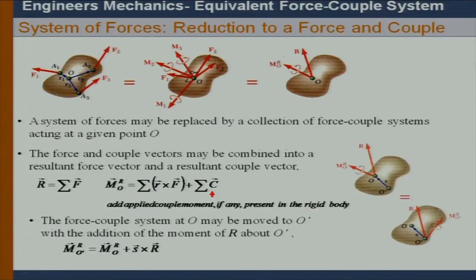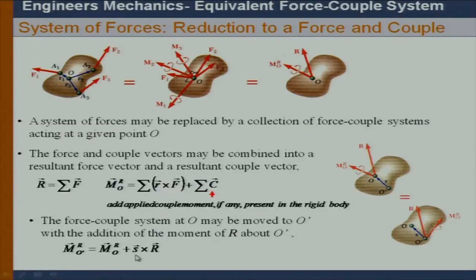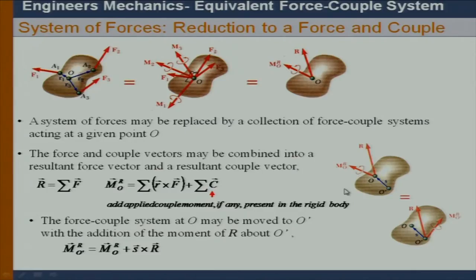If I want to take this system — now a resultant force and resultant moment — to a different point O prime, I will do the same operation. The resultant R will be translated with an added moment component again. The new moment resultant M_O_prime will be simply the previous moment resultant plus s cross R, where s cross R accounts for the translation of R to point O prime. Pictorially, all of these drawn here are actually equivalent systems.